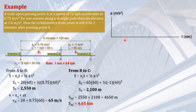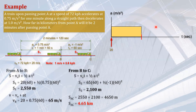If you plot the acceleration of the train versus time: the initial velocity is 20 meters per second — you can represent that as an upward arrow. From A to B, the acceleration is a constant 0.75 meters per second squared for 60 seconds, so it forms a uniform rectangular block — very similar to a uniform load diagram. The area of that rectangle is 60 times 0.75, which equals 45.